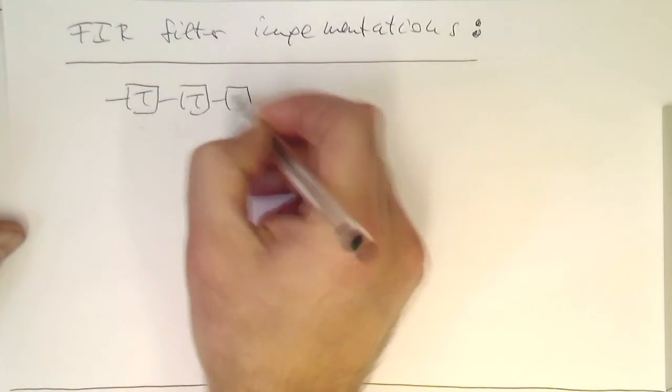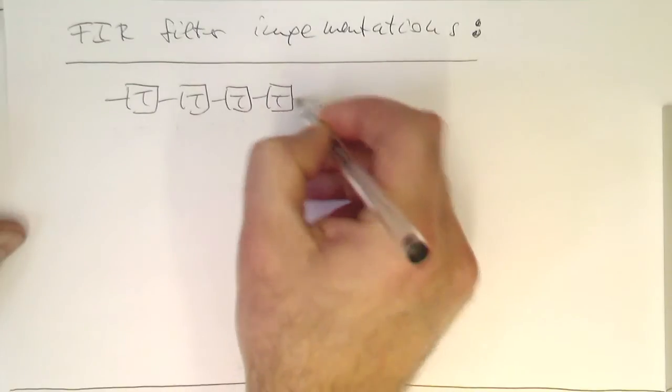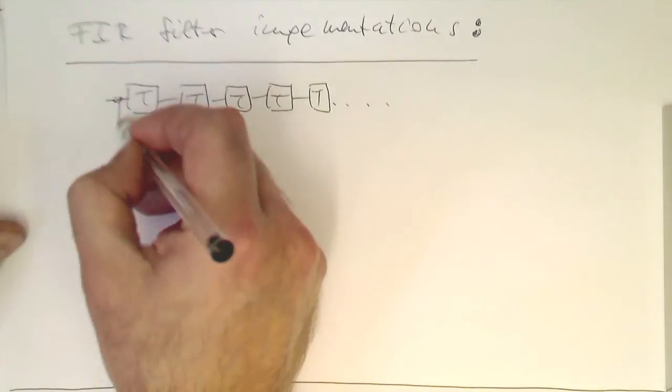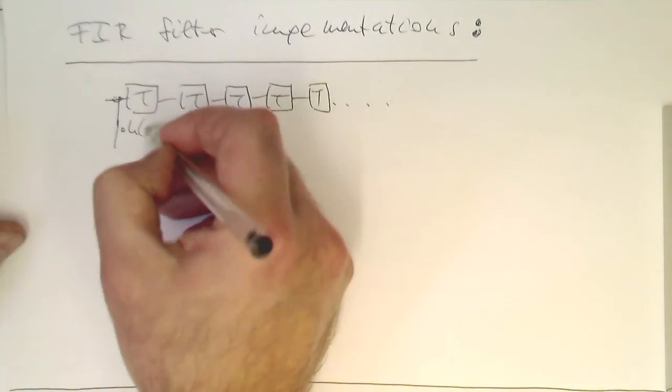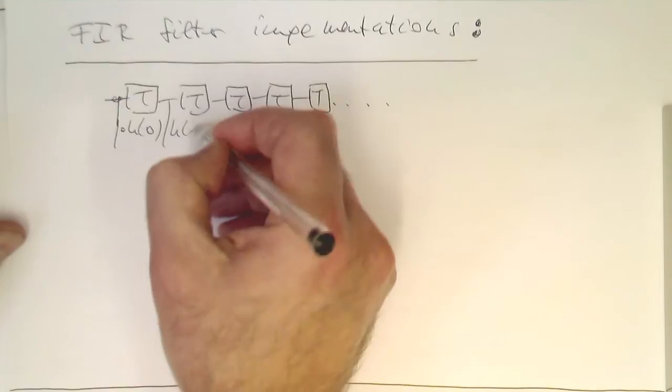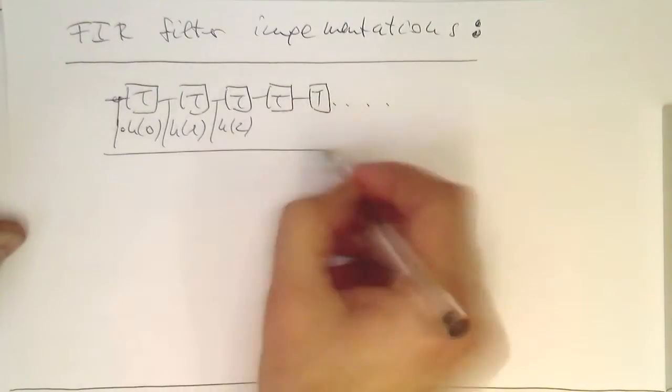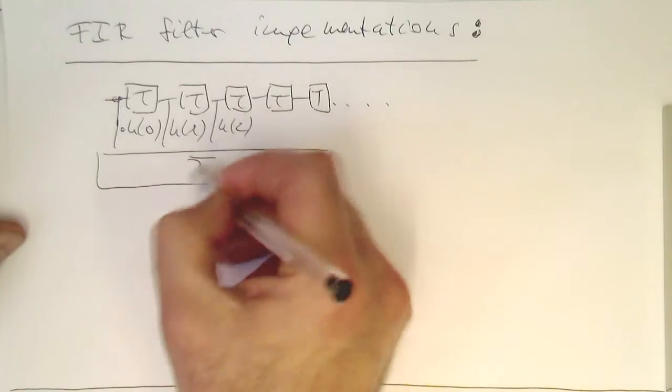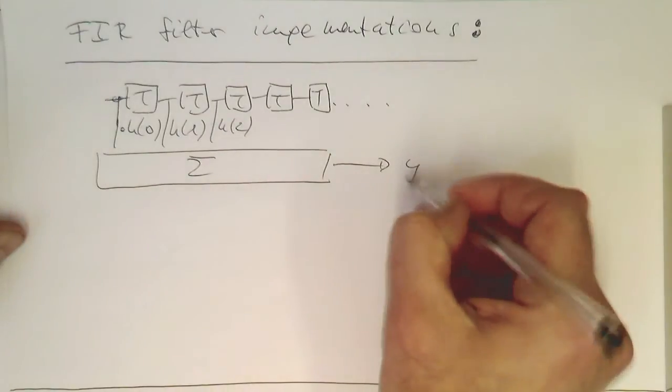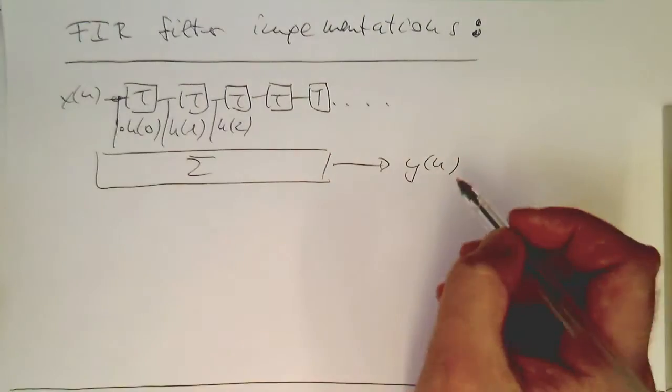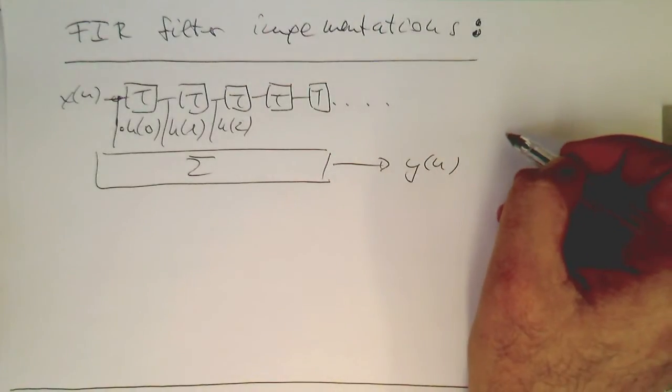So where we've got these delay steps here, and we're multiplying this by a factor. y of n, x of n. So how can we implement this, for example, in C?